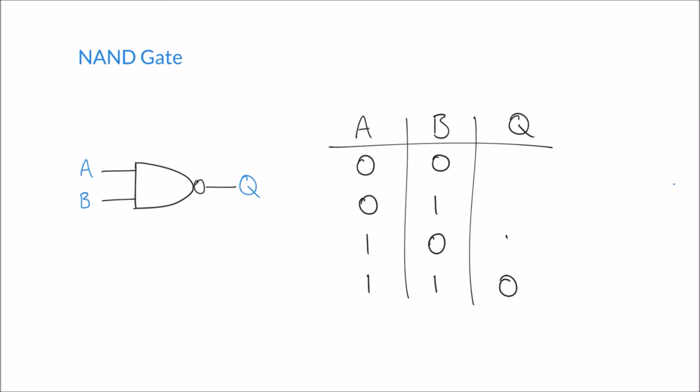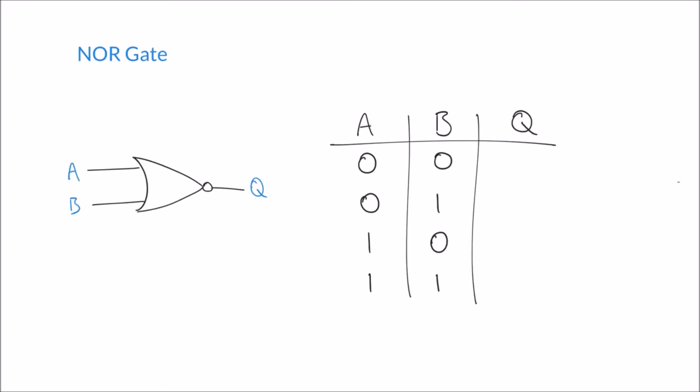We can see the same in the NOR gate. The NOR gate is the inverted output of an OR gate. Remembering the OR gate gave us one when either A or B or both were one, here the NOR gate will give us the opposite behavior of the OR gate.